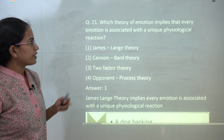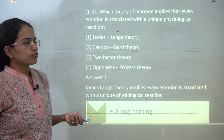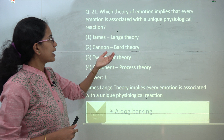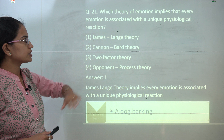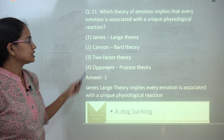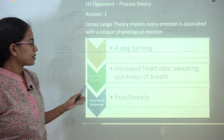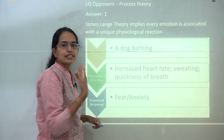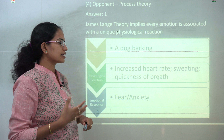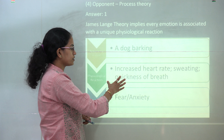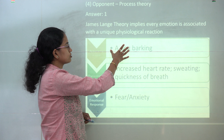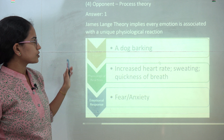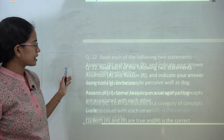The next question is a direct question from theory of emotion. The theory implying that every emotion is associated with a physiological change is the James-Lange theory. For example, seeing a dog barking causes an increase in heart rate or sweating — a physiological reaction to the event. Therefore, the James-Lange theory is the correct answer.